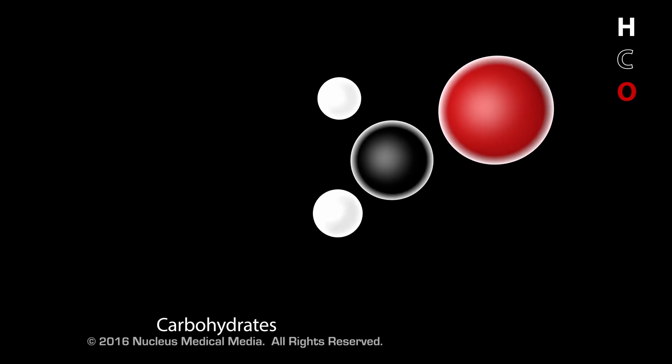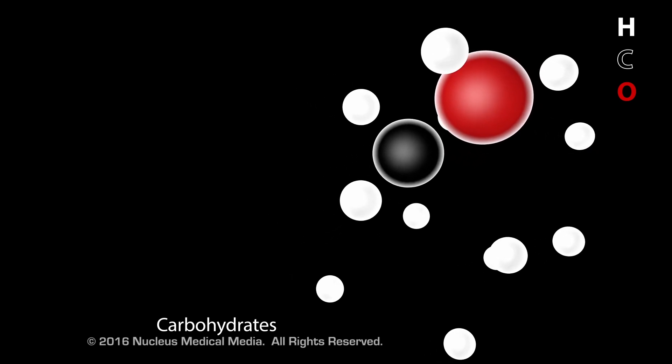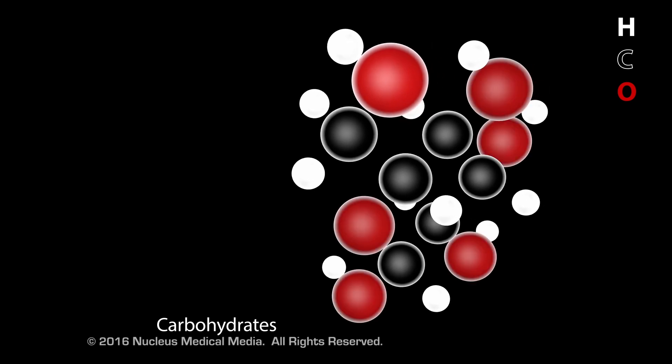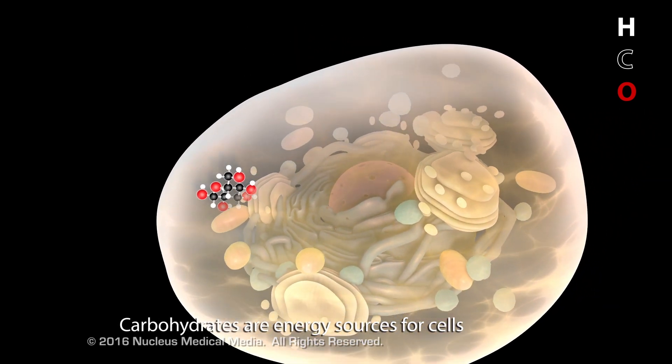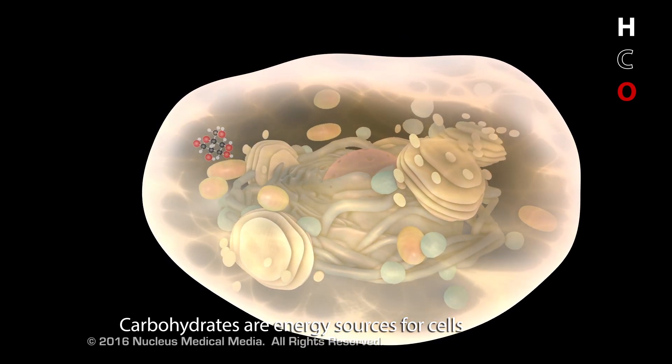For example, glucose has 12 hydrogen atoms, 6 carbon atoms, and 6 oxygen atoms. Carbohydrates are important energy sources for cells.